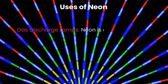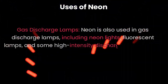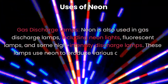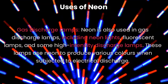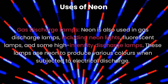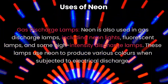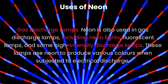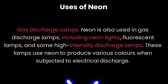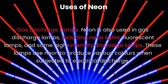Gas Discharge Lamps: Neon is also used in gas discharge lamps, including neon lights, fluorescent lamps, and some high-intensity discharge lamps. These lamps use neon to produce various colors when subjected to electrical discharge.